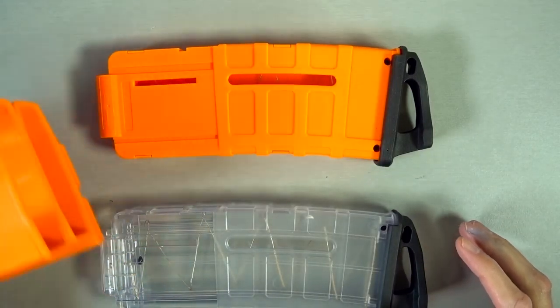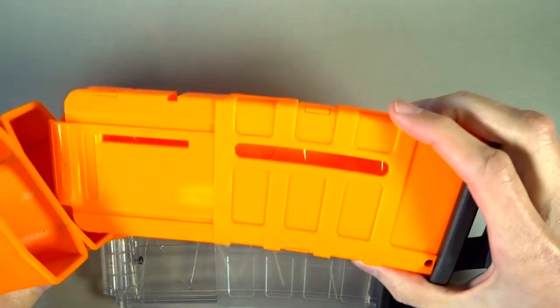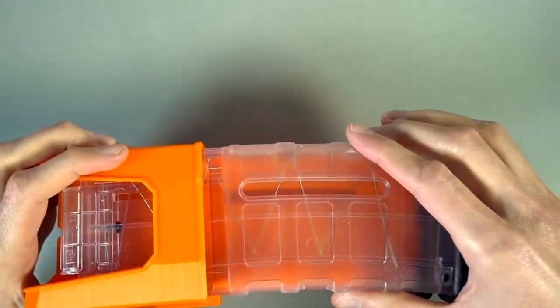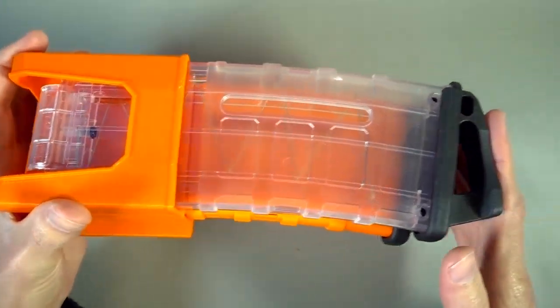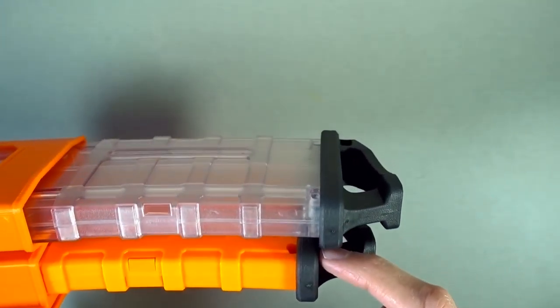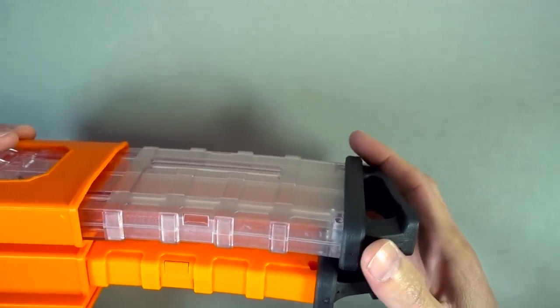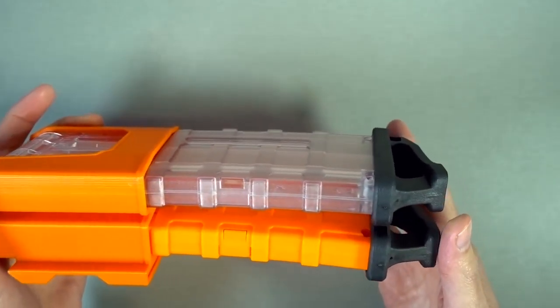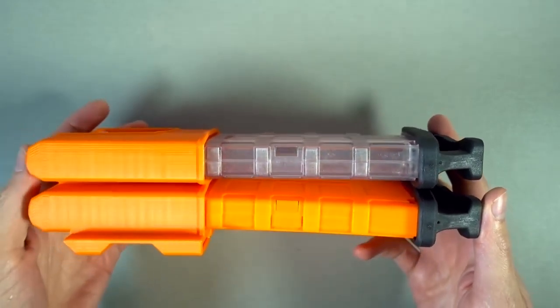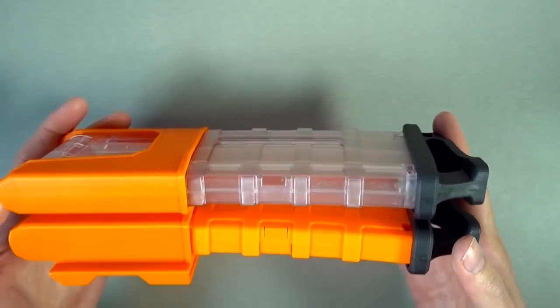An issue comes when you stack these in a two-stack mag holder. So we put the first one in, great, no problem. Put the second one in, and it gets caught. You'll notice it's not in all the way. So the width of the lip here on these actually causes an issue with placing the mags in. Now you can shift to the side and force it in, but it creates a kind of not super comforting bow.